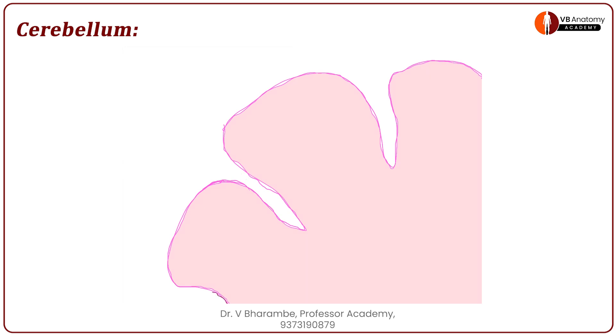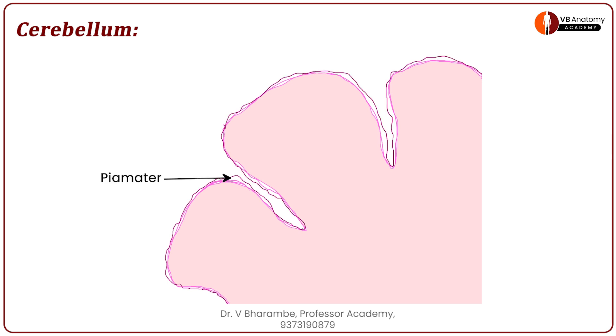Now cover this structure with a very thin layer of pia mater. You can draw a few blood vessels as well, indicating that it is vascular.